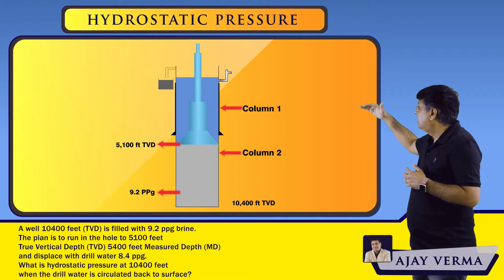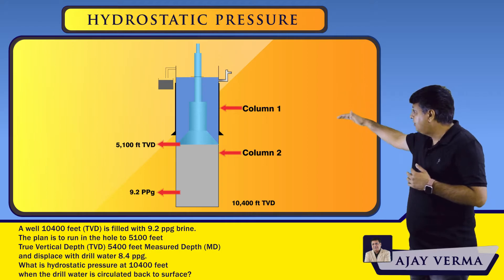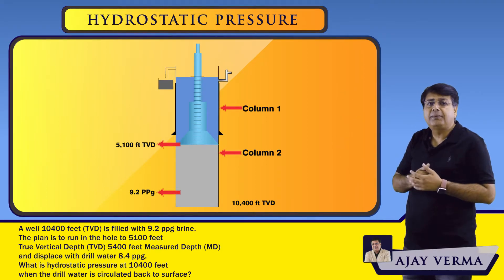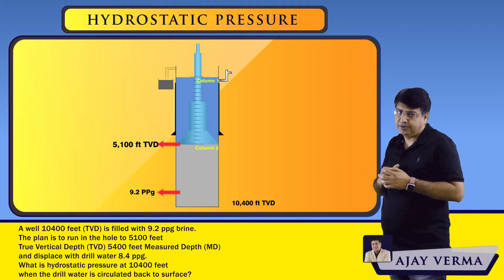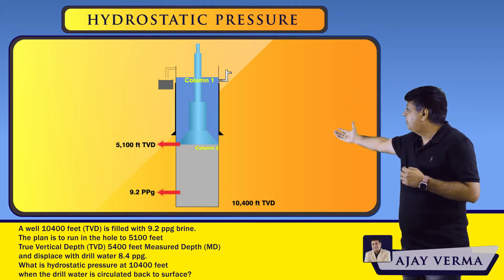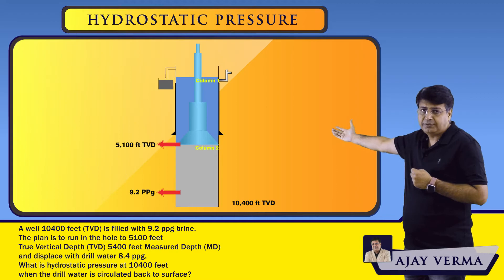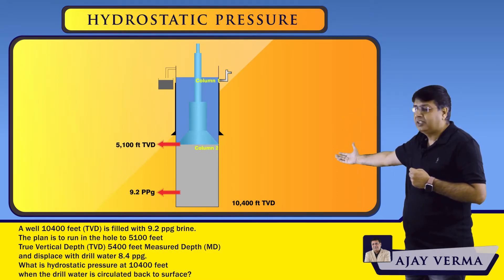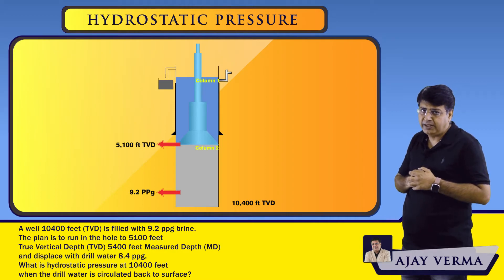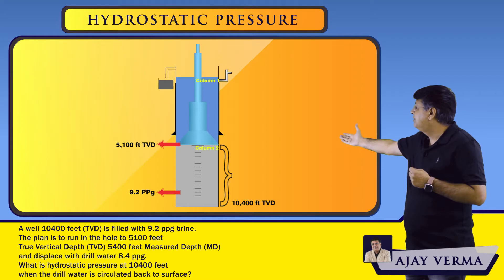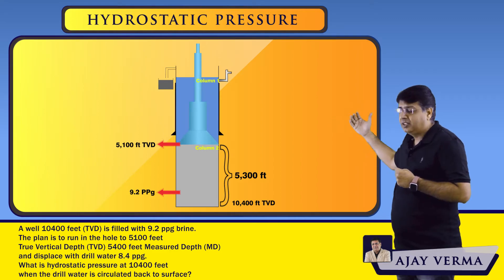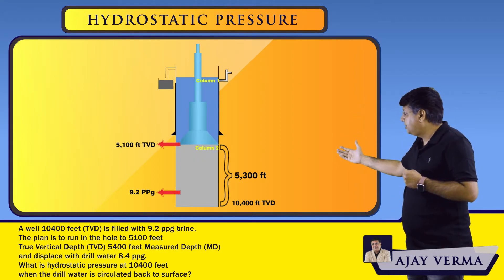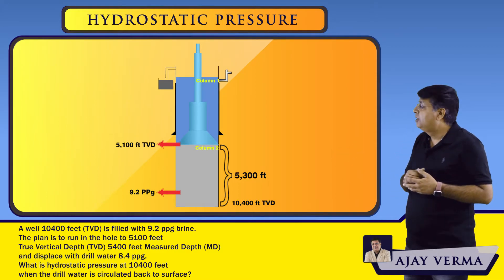We now have two different columns of fluid. The upper column is water, and we need to decide which depth to use for the calculation. Since we are calculating hydrostatic pressure, we should consider TVD — in this case 5,100 feet. The first column is water with a height of 5,100 feet, and the second column is the original brine at 9.2 ppg with a height of 5,300 feet. We add both columns' hydrostatic pressures to get the total pressure at the bottom.